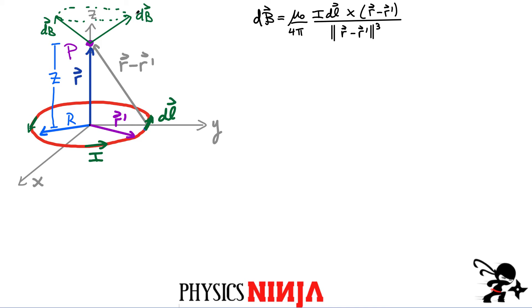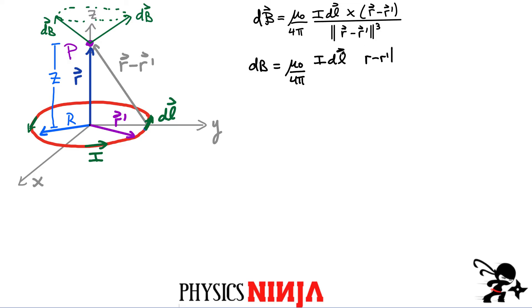Let's first write down just what the magnitude of this vector is. If I'm only interested in the magnitude, it would look something like this. The magnitude of this vector db is mu zero over four pi. To eliminate this cross product, it's i dl — the magnitude of each vector multiplied by r minus r prime, the magnitude of this, divided by r minus r prime cubed. That's the magnitude of this vector. You can get rid of one factor, leaving the expression cleaner.